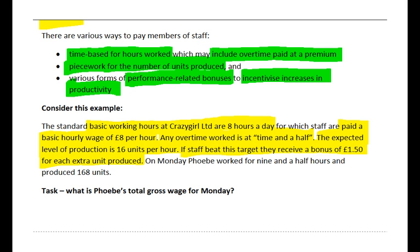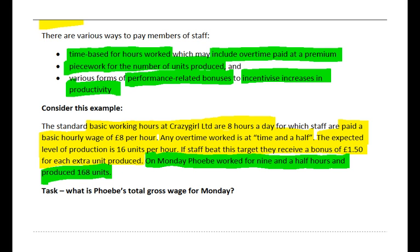If staff beat this target, they receive a bonus of £1.50 for each extra unit produced. So this is the basic information about the way staff are paid at Crazy Girl Limited: basic pay for basic hours, overtime pay for any overtime hours at a premium, and bonuses if they achieve above a certain level of production - possibly three elements to what they get paid. On Monday, Phoebe worked for nine and a half hours and produced 168 units. Our task is to identify what is Phoebe's total gross wage for that day. Bear in mind there are going to be three elements to Phoebe's gross wage: basic pay for the basic hours worked, whether Phoebe worked any overtime and at what rate, and whether Phoebe produced enough units to deserve a bonus.